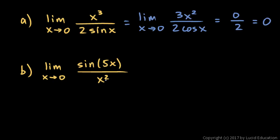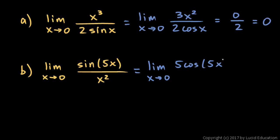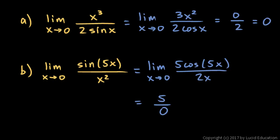In part B, the limit as x approaches 0 of sine of 5x over x squared — again, putting in 0 for x gives us 0 over 0. So let's apply L'Hôpital's rule. This will be the limit as x approaches 0 of the derivative of the numerator, which is 5 cosine 5x, over the derivative of the denominator, which is 2x. As x approaches 0, this is 5 times the cosine of 0, and cosine of 0 is 1, so we get 5 over 2 times 0, which is 0 — giving us 5 over 0. And we stop.